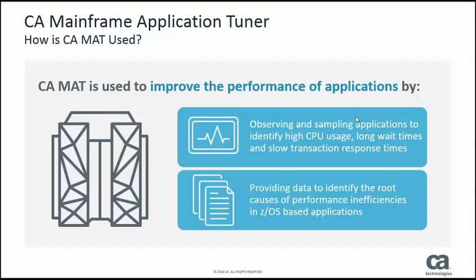How is CA MAT used? CA MAT is used to improve application performance by observing and sampling applications to identify high CPU usage, long wait times, and slow transaction response times. These are the typical areas where your application is going to have performance bottlenecks. MAT is going to provide data to identify the root cause of performance inefficiencies in ZOS-based applications.